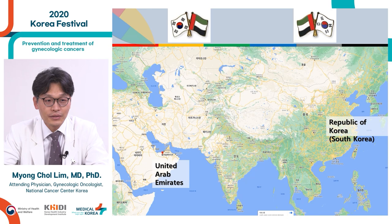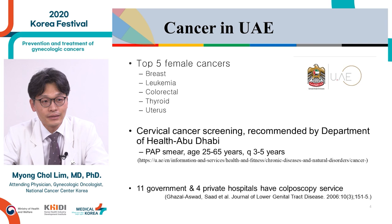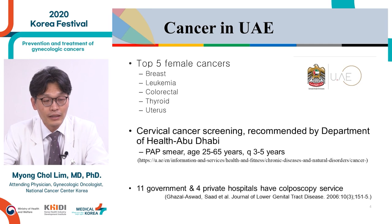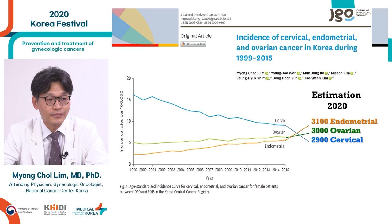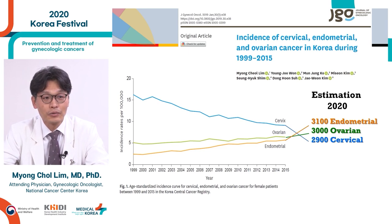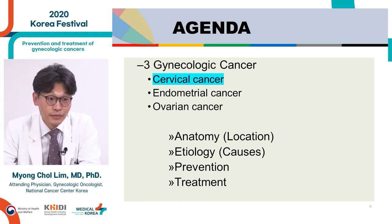This is UAE and this is South Korea. I'd like to start with the incidence of female cancer in both countries. The top five female cancers in UAE are breast cancer, leukemia, colorectal cancer, thyroid cancer, and uterine cancer. In UAE, cervical cancer screening is recommended by the government for women aged 25 to 65 years, every three to five years. In Korea 20 years ago, the number one gynecologic cancer was cervical cancer, followed by ovarian and endometrial cancer. In 2020, the estimated number one gynecologic cancer is endometrial cancer, followed by ovarian and cervical cancer.